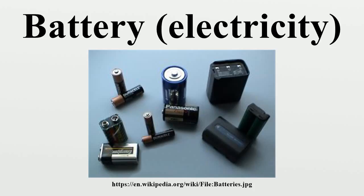Alessandro Volta built and described the first electrochemical battery, the voltaic pile, in 1800. This was a stack of copper and zinc plates, separated by brine-soaked paper disks, that could produce a steady current for a considerable length of time.